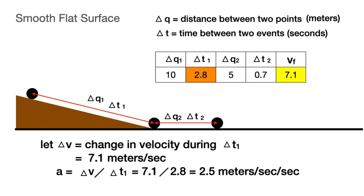Again, by definition, the average acceleration, a equals delta v divided by delta t sub 1, or 2.5 meters per second per second.